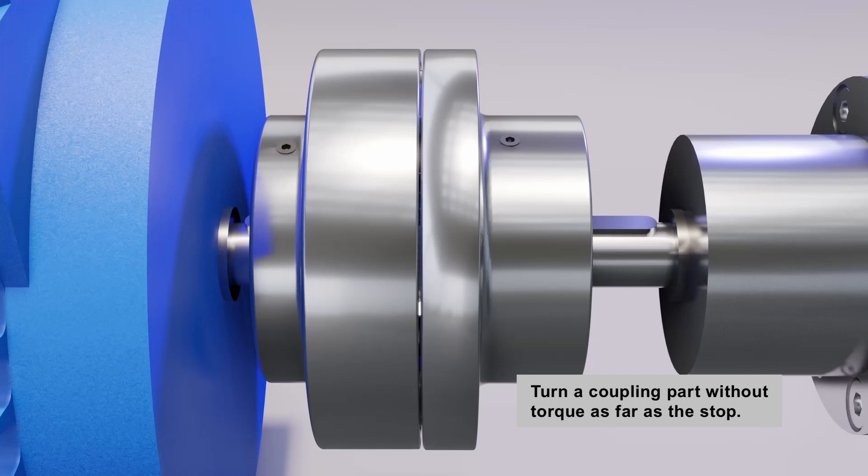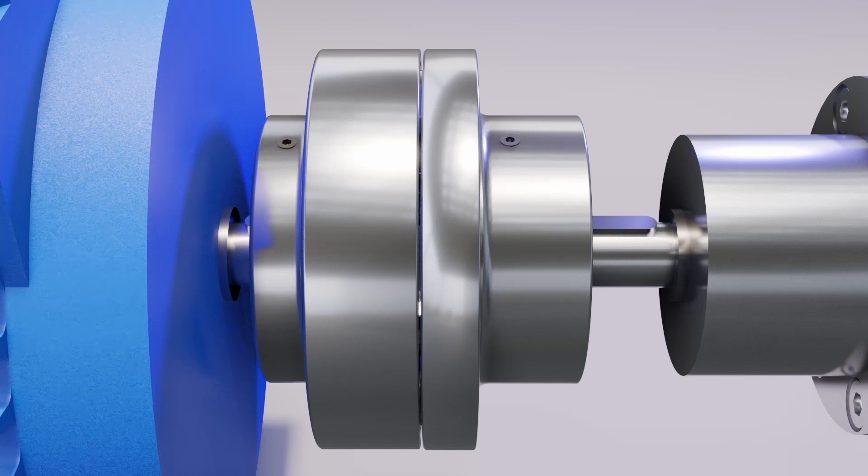In order to determine the torsional backlash, turn a coupling part without torque as far as the stop. Make a mark on both halves of the coupling.